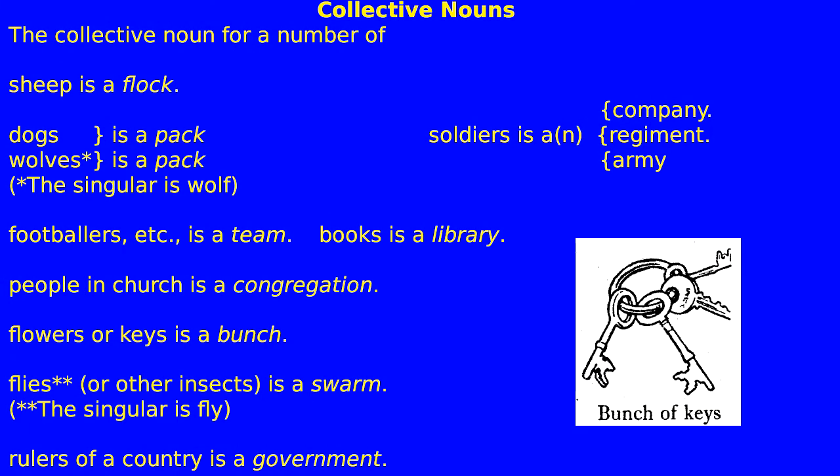Collective nouns: the collective noun for a number of sheep is a flock; dogs is a pack; wolves is a pack (singular: wolf); soldiers is a company, a regiment, or an army; footballers etc. is a team; books is a library; people in church is a congregation; flowers or keys is a bunch; flies or other insects is a swarm (singular: fly); rulers of a country is a government.